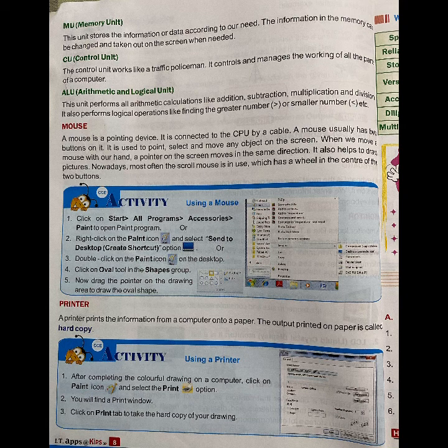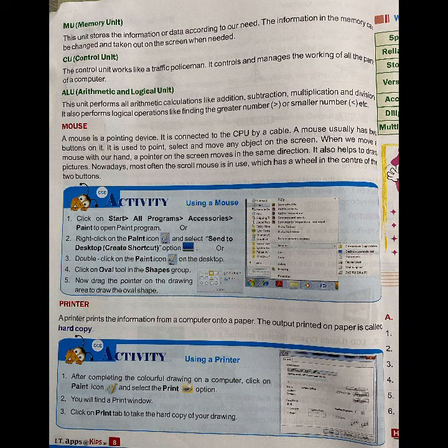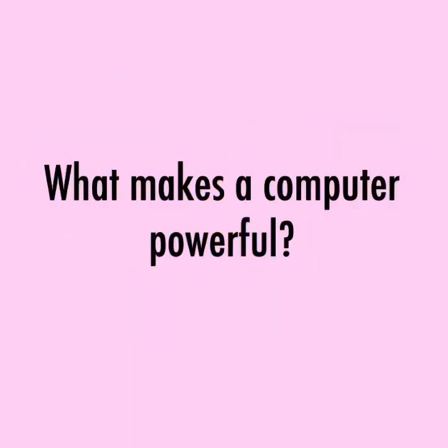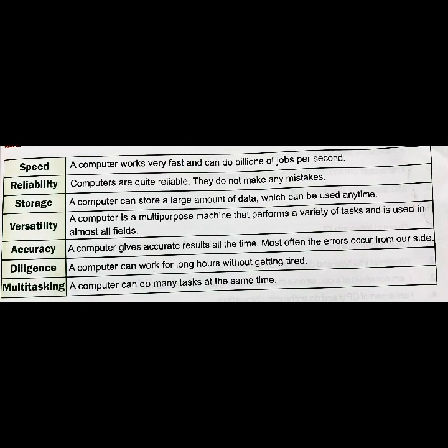Mouse — a mouse is a pointing device connected to the CPU by a cable. It usually has two buttons and is used to point, select, and move any object on the screen. When we move a mouse, a pointer on the screen moves in the same direction. Nowadays the scroll mouse is most common, which has a wheel in the center. Printer — a printer prints information from a computer onto paper. The output printed on paper is called hard copy.